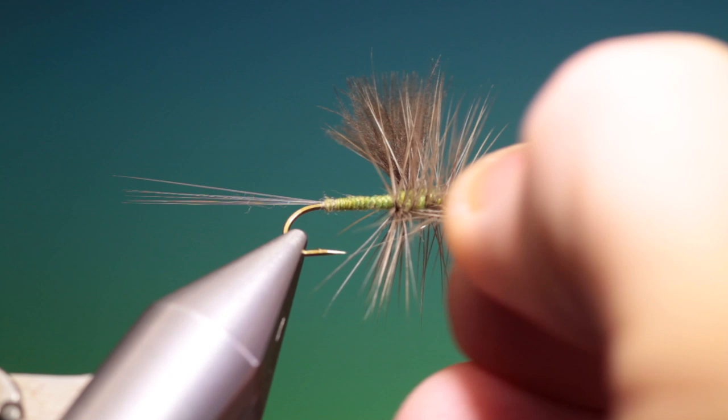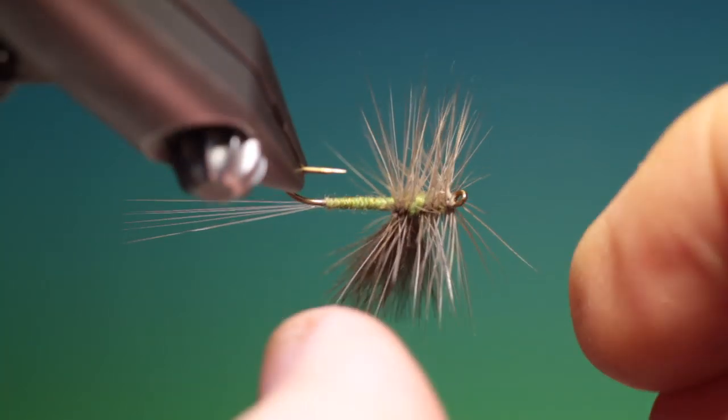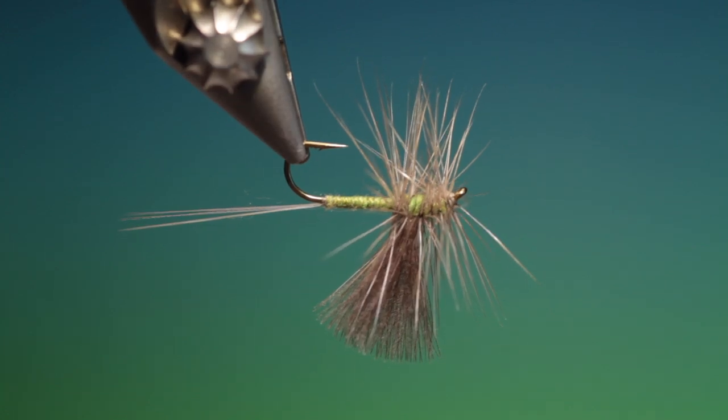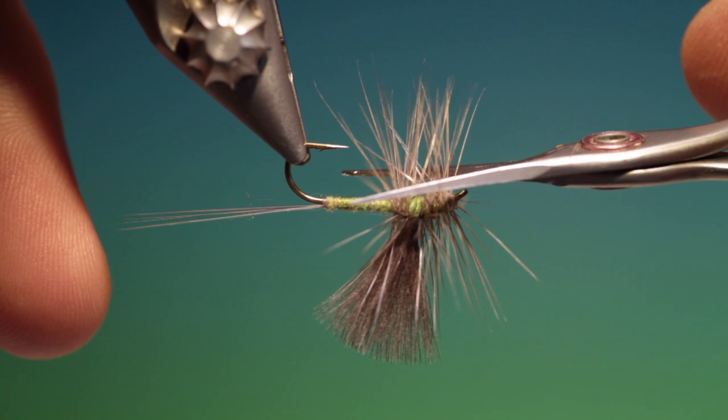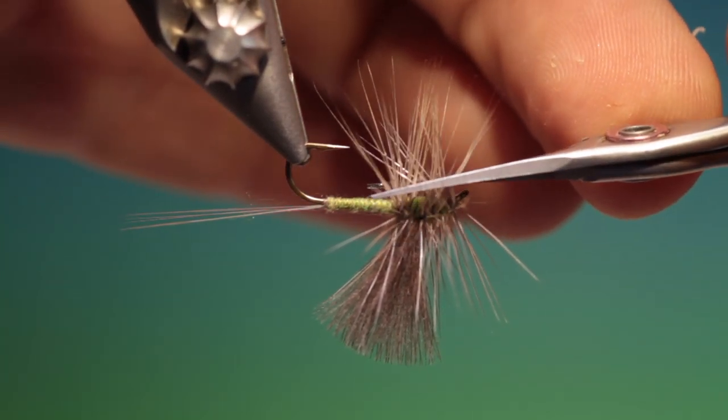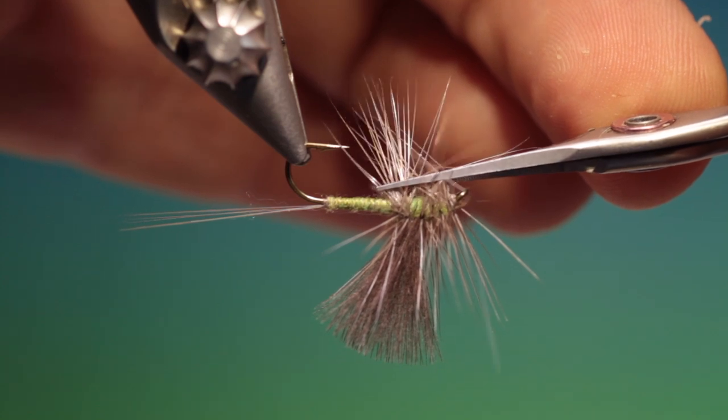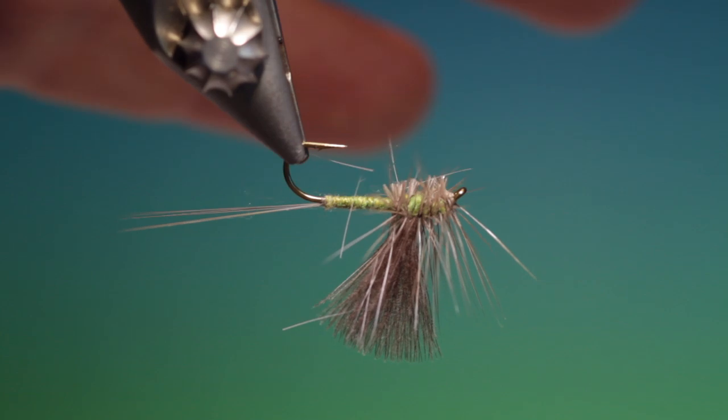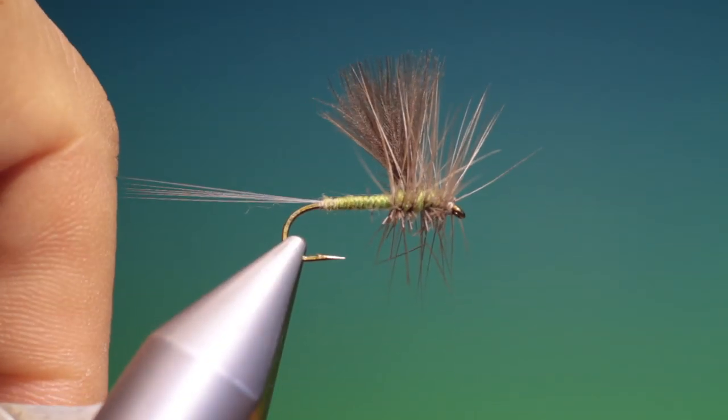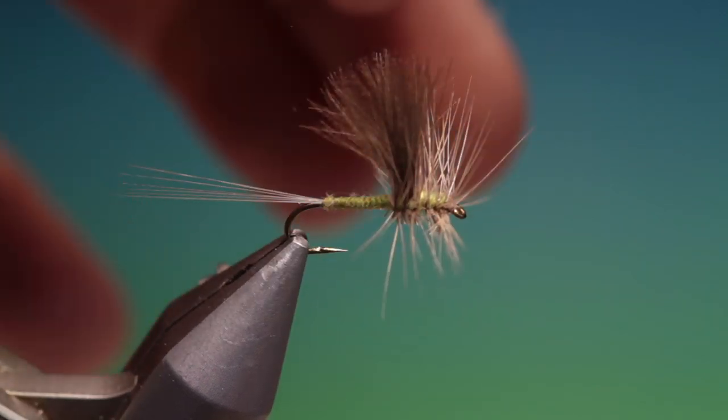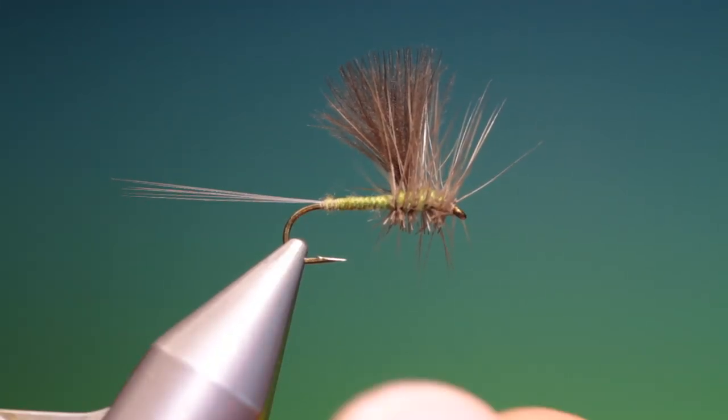Now, this is where the long hackle comes in. What we want to do now is take our scissors and remove everything on the underside, but leave just some little stubs. There we go. That's it.